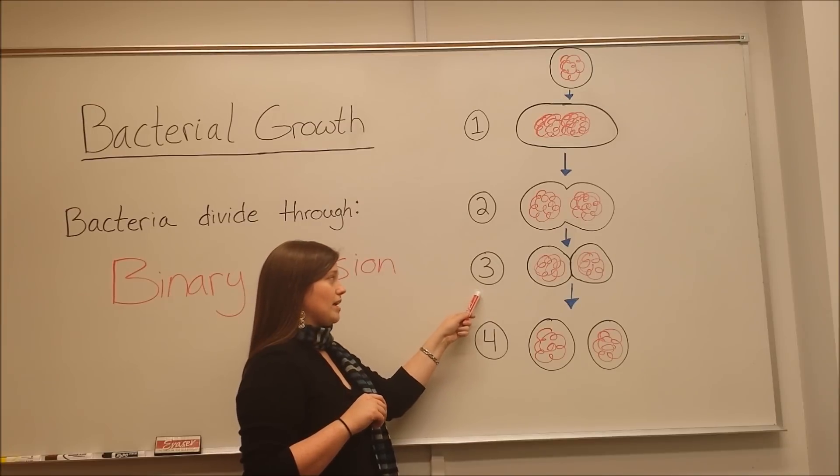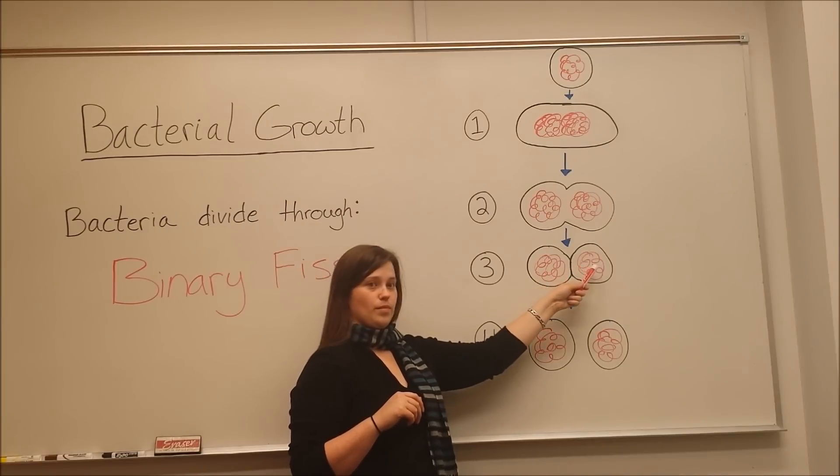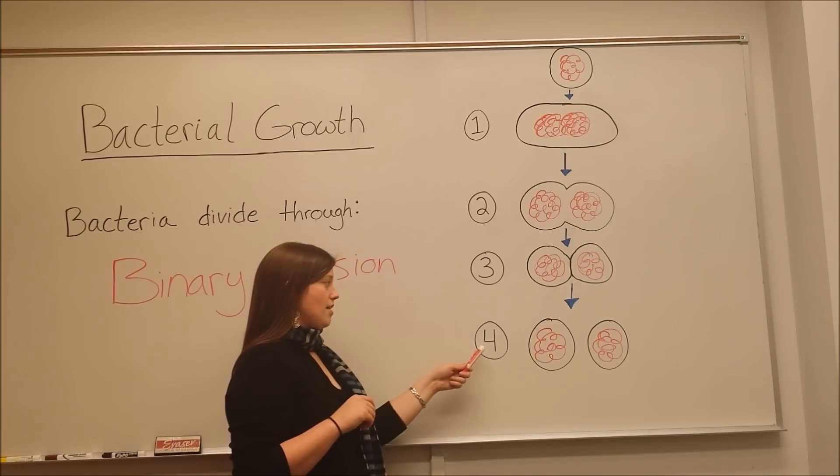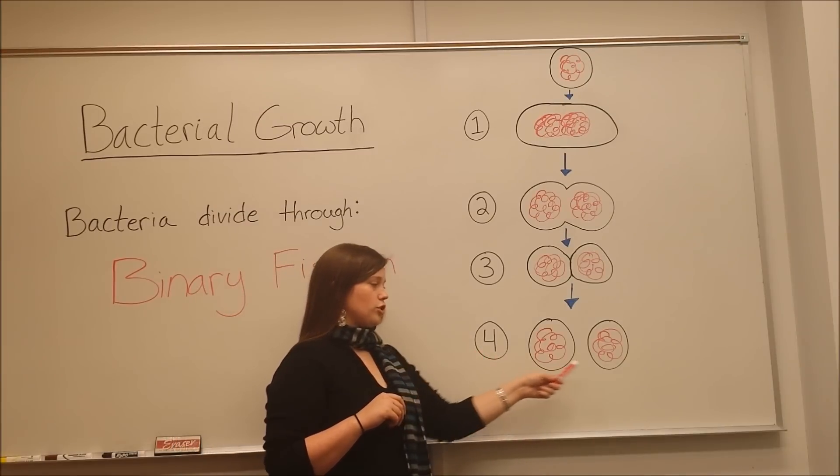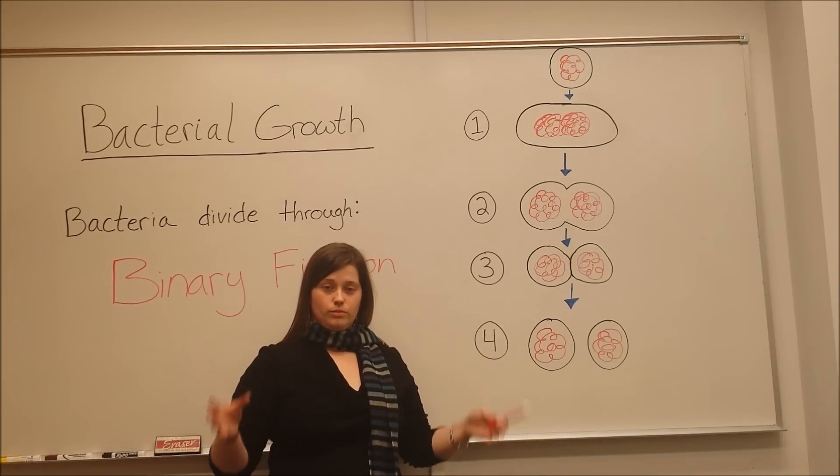In step three, the cross wall forms. This separates the original DNA from the replicated DNA that occurred in step one. Then, you get, in step four, the two daughter cells fully separating into new cells.